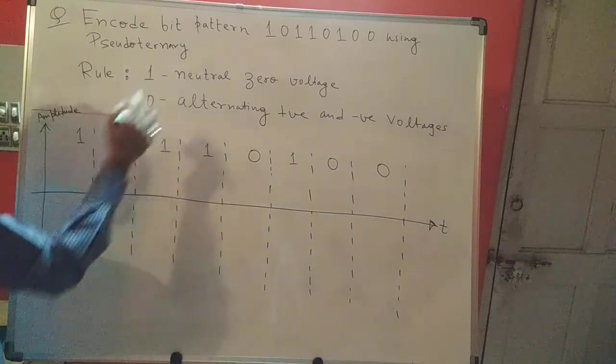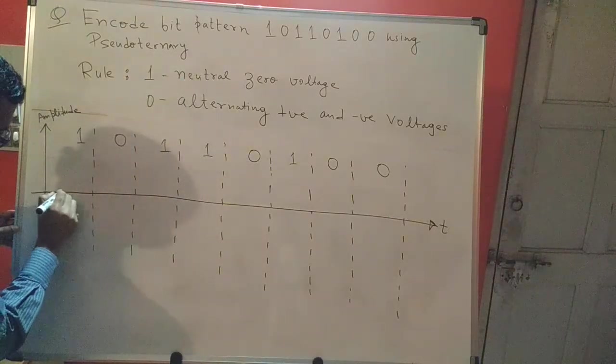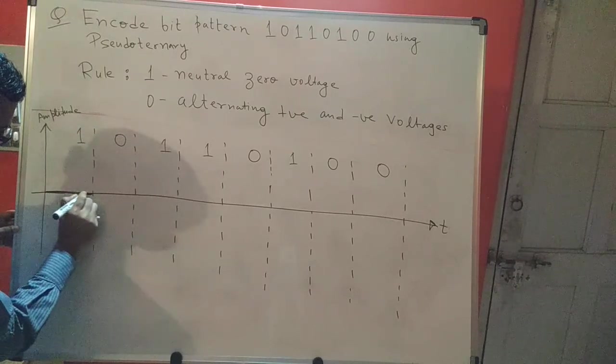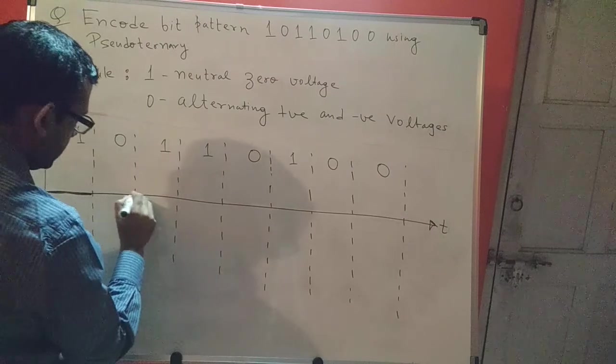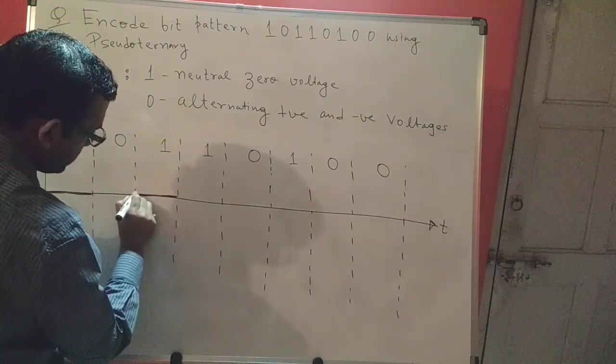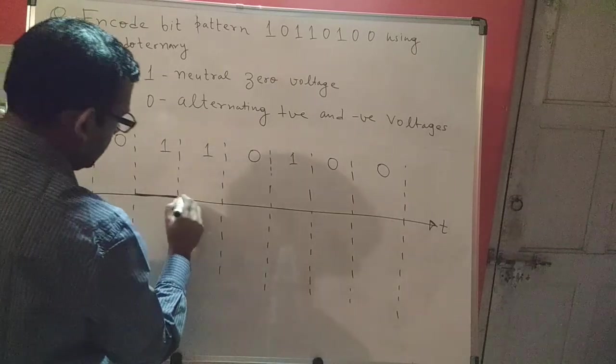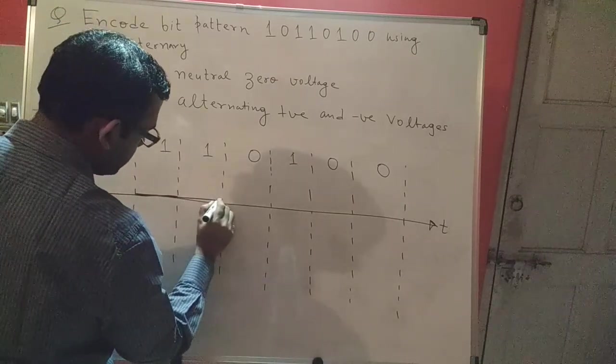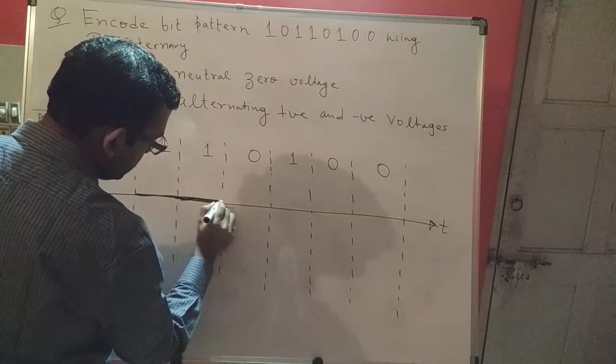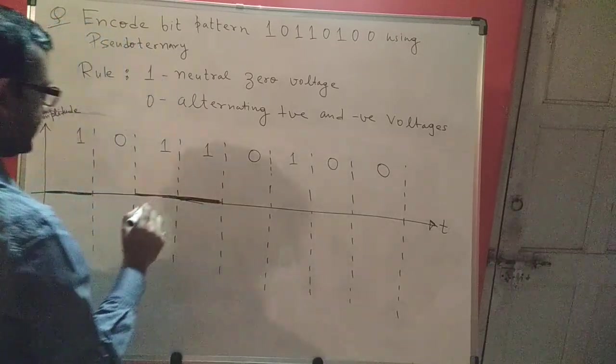So 1 represents a neutral voltage. Whenever I see a 1, I'll draw a signal along the time axis. Here again I see a 1, so I'll draw it along the time axis. I'm encoding the ones first just to proceed with things a bit quicker. They'll be simply along the time axis representing 0 voltage.